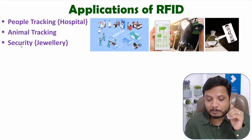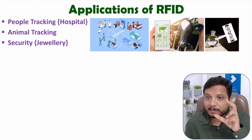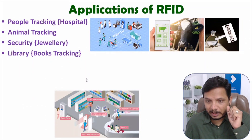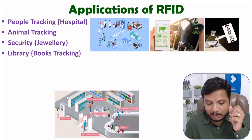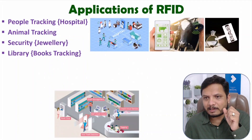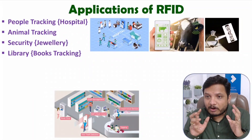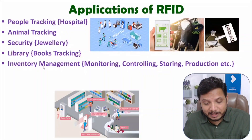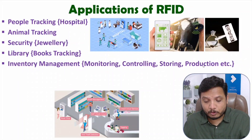For security purposes, many applications are there. Like in jewelry, RFID tags are attached to rings — the ring can be tracked inside the location and easily identified. In a library, book tracking can be done. There can be many sections in a library, so for a librarian, if you have RFID tags on books, tracking becomes very easy, because students may misplace books in different sections. In inventory management, monitoring, controlling, storing, and production can all be handled using RFID.